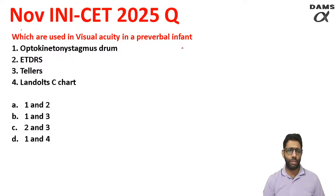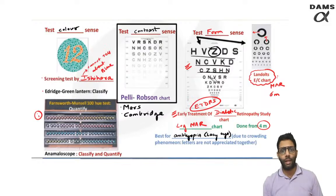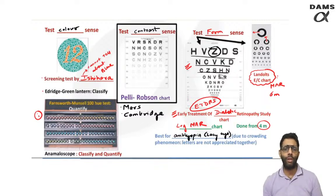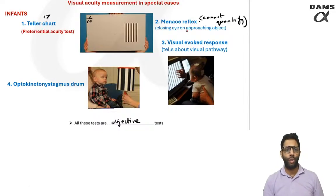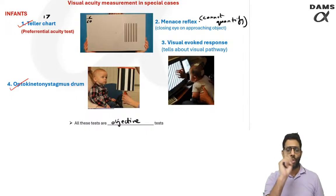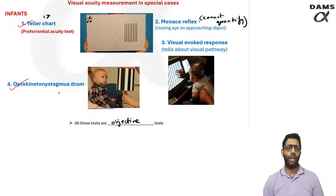Pre-verbal infant visual acuity — which methods are used? ETDRS cannot be used; it tests form sense, requiring the patient to identify letters like H, V, Z. A pre-verbal child or infant cannot do this. Landolt's C-chart and E-chart are for illiterate patients who can indicate direction. For infants, there are four methods: menace reflex cannot quantify vision — it only tells you if the child has some vision or not. You quantify by Teller acuity cards chart. You can also quantify by optokinetic nystagmus, which is a physiological nystagmus — you rotate a drum and a nystagmus appears. And there is visual evoked response. So the answer for visual acuity measurement in a pre-verbal infant is optokinetic nystagmus drum and Teller acuity cards.